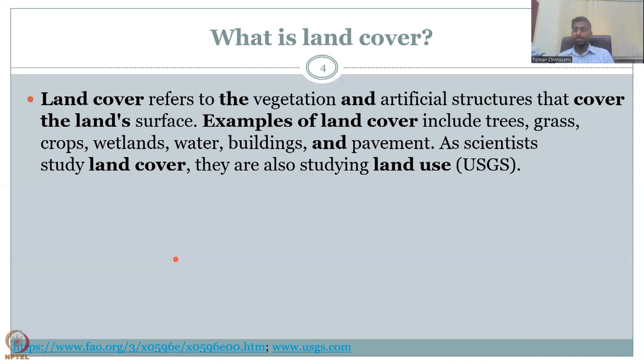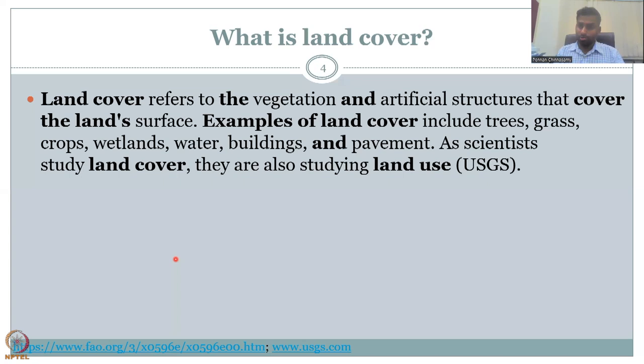Land cover is something that covers the land — it could be artificial or natural. For agriculture and rural development, crops are very important. Sustainable agriculture requires preserving the forest, so agroforestry is important. Water and wetlands are very important to preserve soil nutrients and to mitigate climate change impacts — like the Sundarbans, which play a key role in reducing sea level rise impacts in Bangladesh.